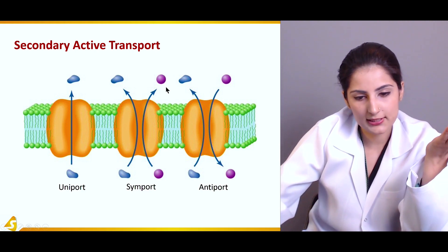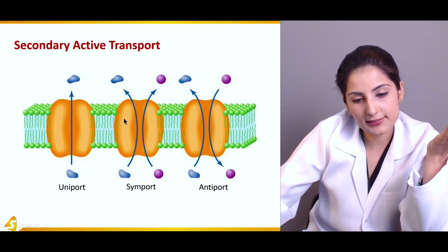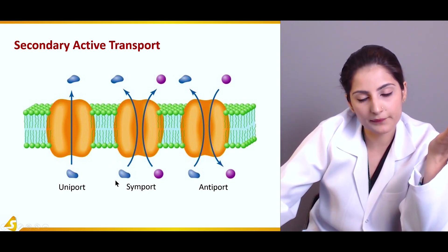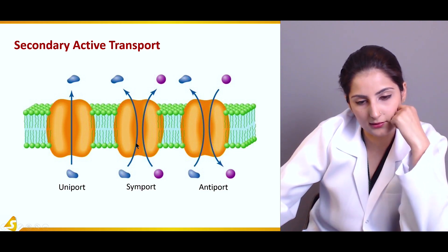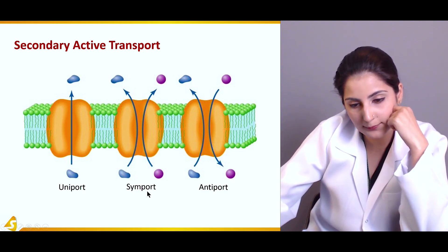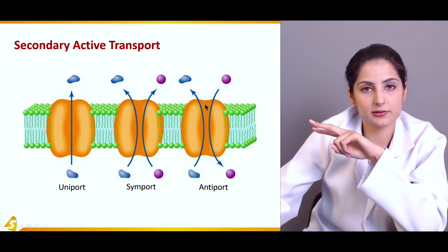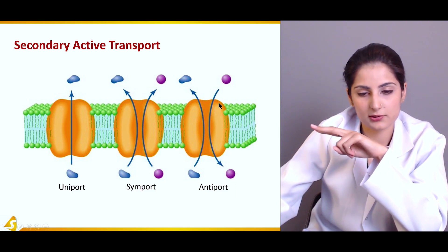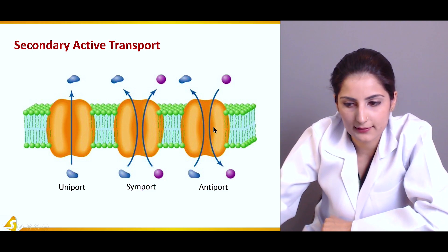In this diagram, the arrows show both molecules going in the same direction — the protein carrying out this transport would be known as a symport. In antiport, or counter-transport, the arrows go in opposite directions — one molecule is going out and one is going in.